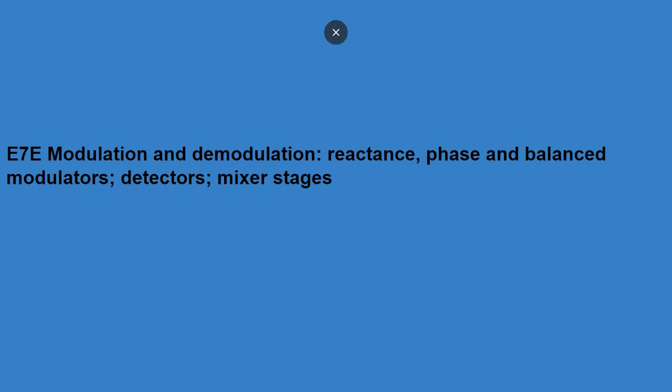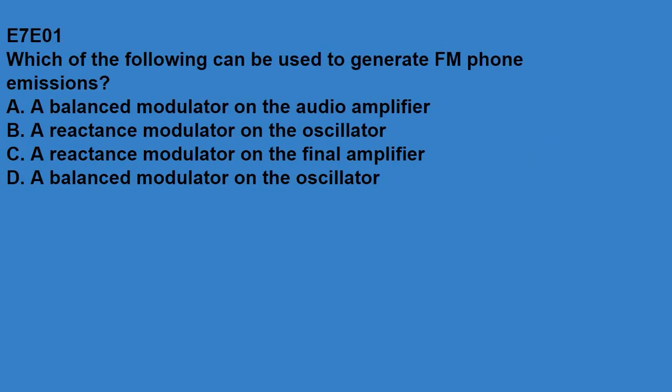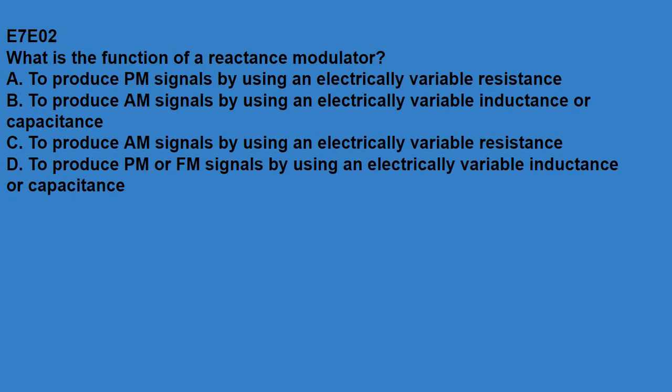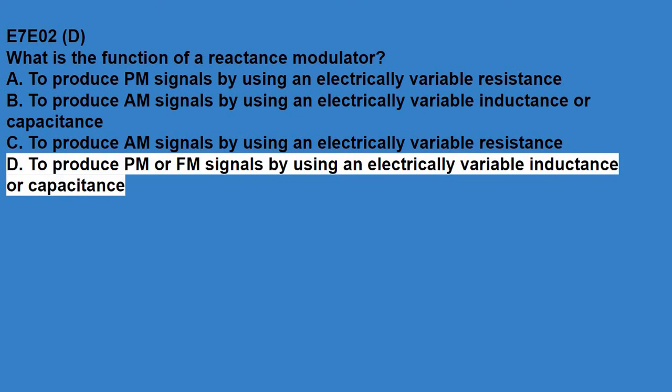E7E covers modulation, demodulation, reactance modulators, phase and balance modulators, detectors, and mixer stages. E7E01, which of the following can be used to generate FM phone emissions? A reactance modulator on the oscillator. E7E02, what is the function of a reactance modulator? To produce PM or FM signals by using an electrically variable inductance or capacitance.